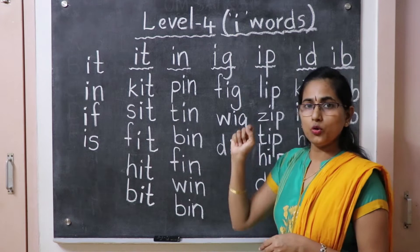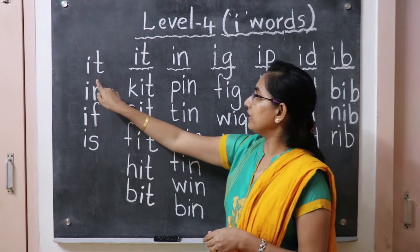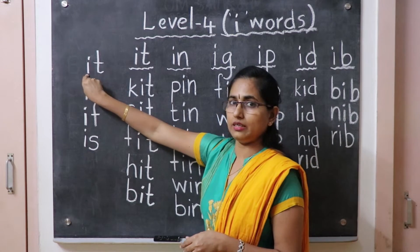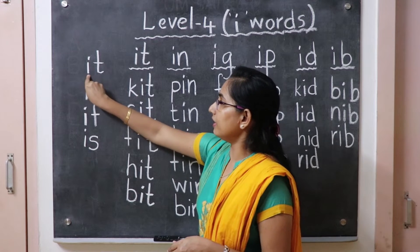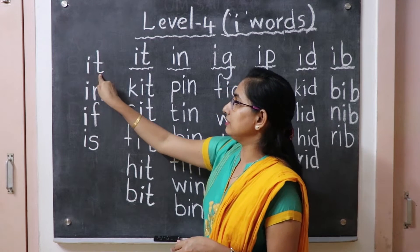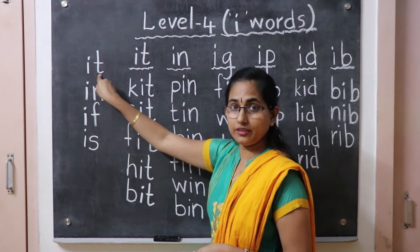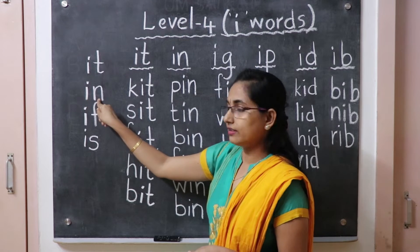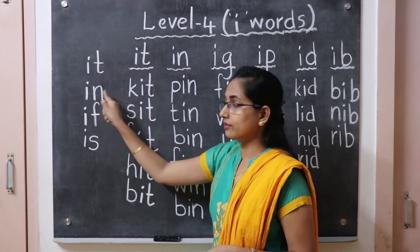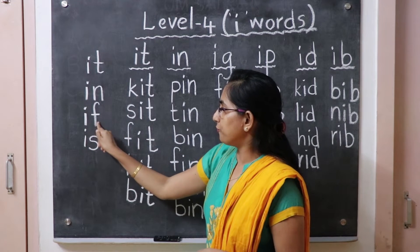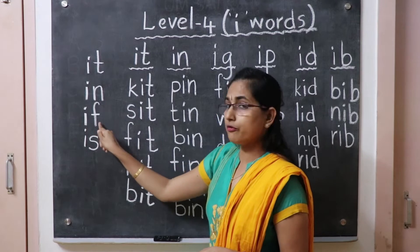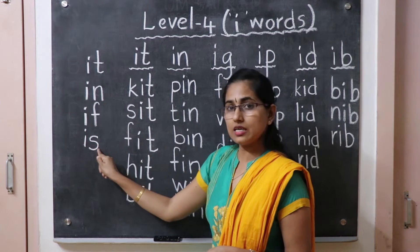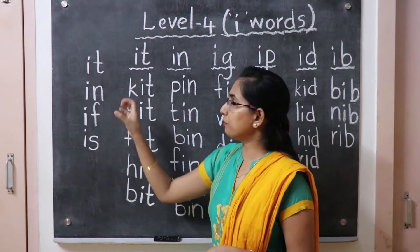The I sound is E. In the beginning, the I sound is E. Two-letter words: it, in, if, is.